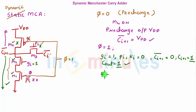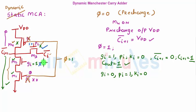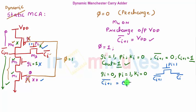Second case: PHI equals one, GI equals zero, PI equals one, KI equals zero. When PI is one, M3 is on. GI is zero so M2 is off, disconnecting the pull-down path. This is pass transistor logic where PI is one and CI bar is passed through, so CI+1 bar equals CI bar, meaning CI+1 equals CI. When propagate is high, CI propagates to the output — functionality is achieved.